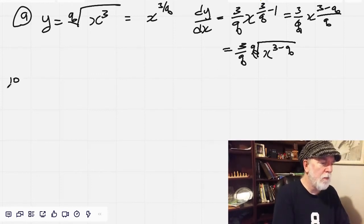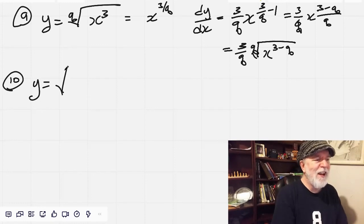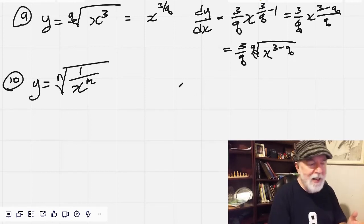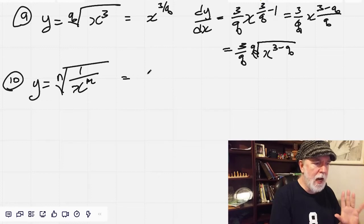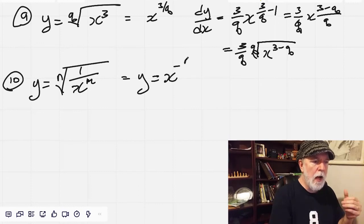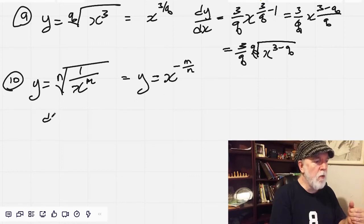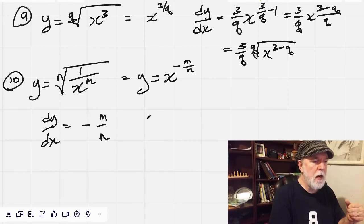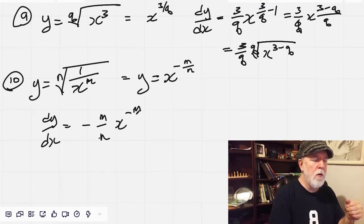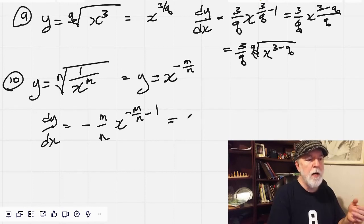And now finally, number 10. y equals the nth root of 1 over x to the m. Rewrite that as y equals x to the negative m over n. And as before, dy by dx equals, bring that negative m over n to the front, and x to the negative m over n minus 1. Or negative m over n, x to the negative m over n minus the n over n.